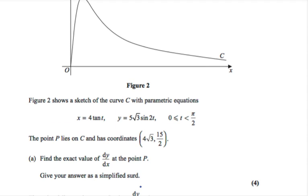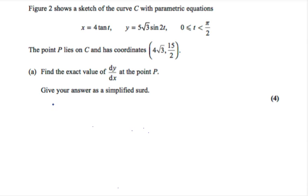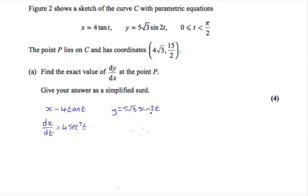We begin by differentiating x and y both with respect to t. x equals 4 tan t and y equals 5 root 3 sin 2t. In the formula booklet it tells you the derivative of tan t is sec squared t, so the derivative of 4 tan t will be 4 sec squared t. To differentiate y, we find the derivative of 2t which is 2, we multiply that by 5 root 3. 2 times 5 root 3 gives us 10 root 3, and the derivative of sin is cos, so dy/dt equals 10 root 3 cos 2t.